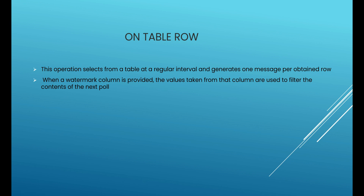Today we are going to use the On Table Row database connector. This operation selects the data from the table at regular intervals and generates one message per row. When the watermark column is provided in this connector, the value from that watermark column is used to filter the contents of the next poll, so that we don't read the same row multiple times.